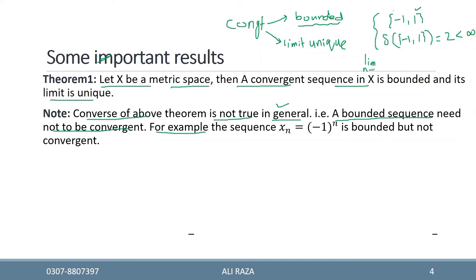لیکن یہ sequence convergent نہیں ہے۔ اس کی limit اس کی power n پر depend کرتی ہے: اگر n even ہو تو limit 1 آتی ہے، اور اگر n odd ہو تو limit -1 آتی ہے۔ مطلب limit کے دو مختلف جواب نکلتے ہیں۔ پچھلے theorem کے مطابق limit unique ہونی چاہیے، لیکن یہاں unique نہیں ہے، اس لیے یہ convergent نہیں ہے۔